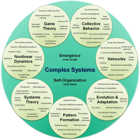Throughput — the rate of energy transfer between the system and its environment during the time it is functioning. Microsystem — the system closest to the client. Mesosystem — relationships among the systems in an environment. Exosystem — a relationship between two systems that has an indirect effect on a third system.